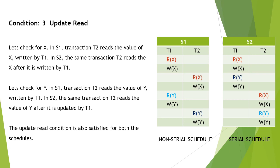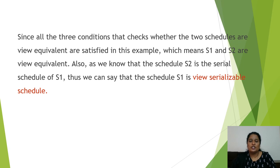Condition 3 — Update Read. This condition states that in S1, if transaction T2 reads the value of X written by T1, then in S2, the same transaction T2 should read X after it is written by T1. Checking for Y: in S1, transaction T2 reads the value of Y updated by T1. In S2, the same transaction T2 reads the value of Y after it is updated by T1. So the update read condition is also satisfied for both schedules. Since all three conditions are satisfied by S1 and S2, we can say S1 and S2 are view equivalent, and schedule S1 is a view serializable schedule.